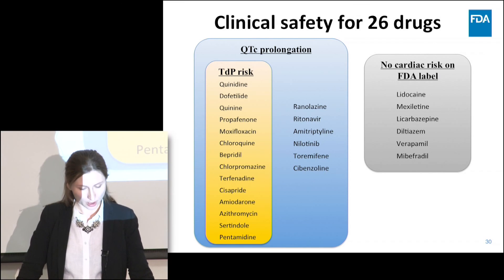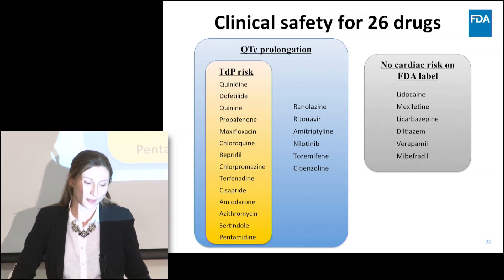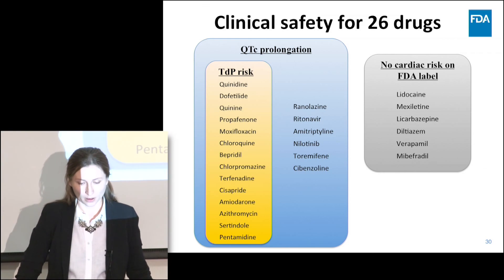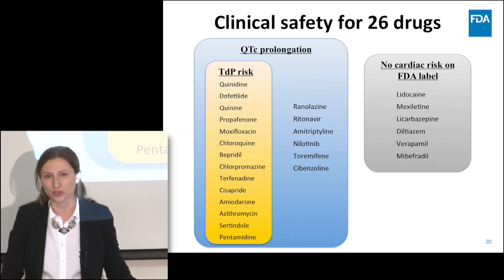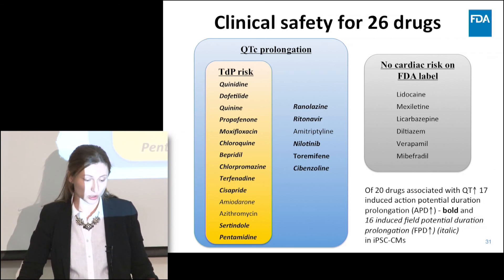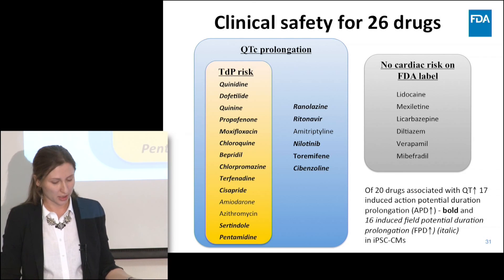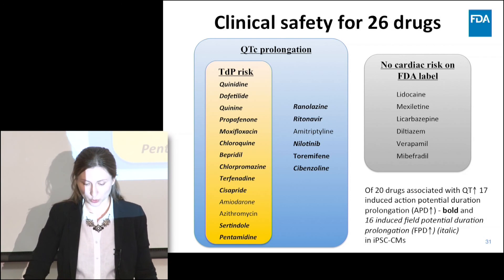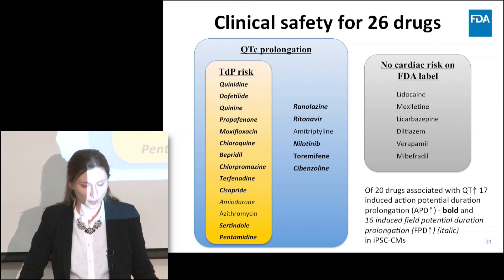To summarize, we had 26 drugs in this study and 20 drugs are linked to QTC prolongation. Out of these 20 drugs, 14 are also associated with TdP risk. We also had six negative control drugs that do not have QT prolongation or TdP risk on FDA-approved labels. Out of 20 drugs associated with QT prolongation, 17 induced action potential duration prolongation, shown in bold, and 16 induced field potential duration prolongation, shown in italic — a similar characteristic from microelectrode array recordings in stem cells.